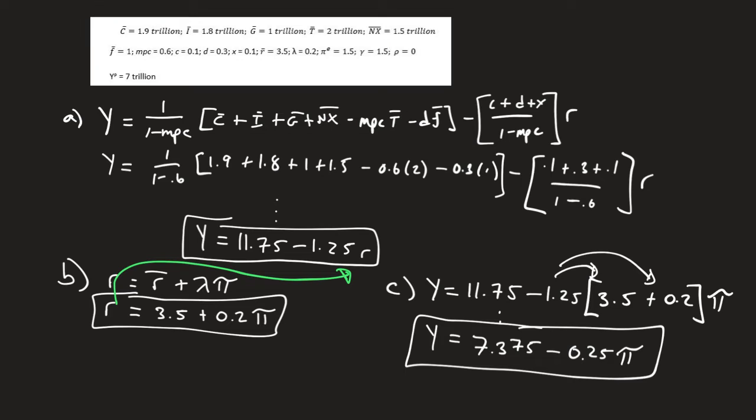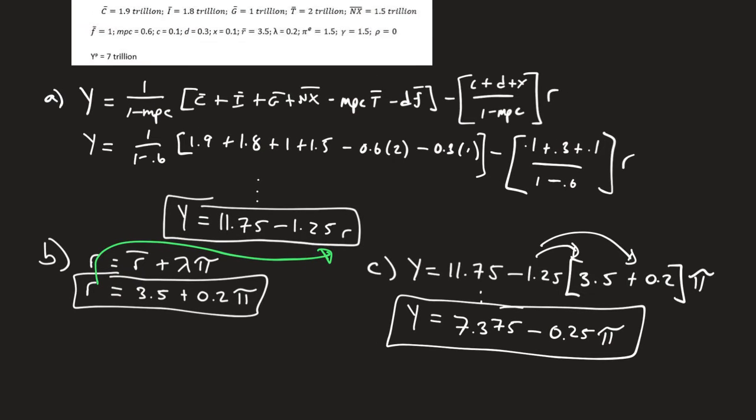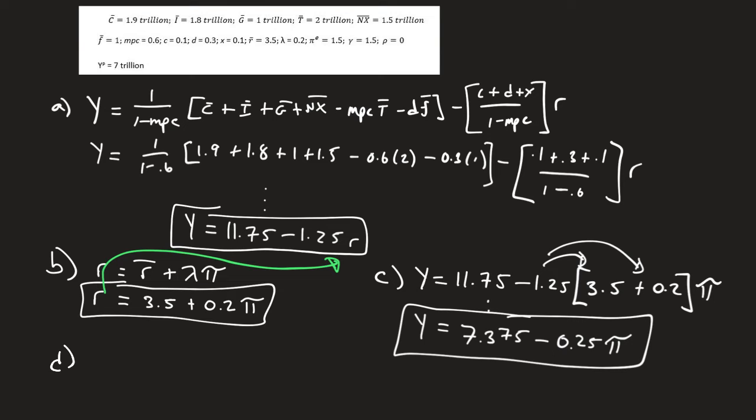Last but not least in creating the curves, we do need our aggregate supply curve. For the aggregate supply curve, we have to remember we have pi equals expected inflation plus gamma times Y minus YP, that's our output gap, plus any sort of price shock. And when we plug this in, we get pi equals 2, we'll expect that inflation is 1.5 plus gamma is 1.5 as well, times Y minus 7.